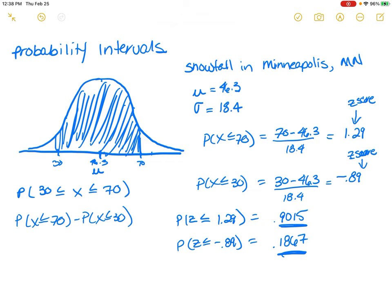We then take the difference between these two scores. So we know that the probability that X is between 30 and 70 now is equal to 0.9015. I'm using the X and the Z's interchangeably. And this is the same thing as Z less than or equal to 1.29 and negative 0.89. So it's equal to 0.9015 minus 0.1867. And that gives me a probability of 0.7148.